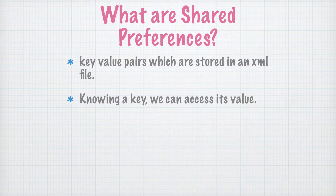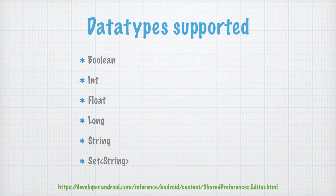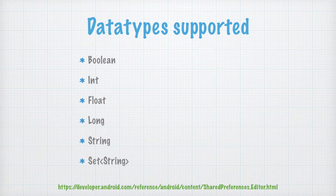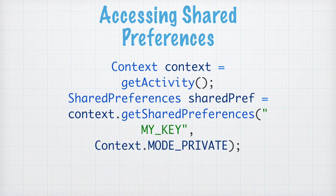Shared preferences are just key-value pairs which are stored in an XML file. If we know a key, we can access its value directly. The data types supported by shared preferences are: boolean, integer, float, long, and string — all the primitive data types are supported. In addition to that, sets consisting of strings can also be stored in shared preferences.